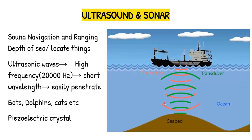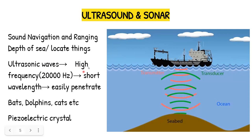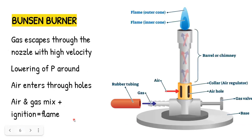Next is SONAR and ultrasound. SONAR is an acronym for Sound Navigation and Ranging, and it is used to determine the depth of the sea or to locate objects such as a seabed, enemy submarines, or fish. Ultrasound — ultrasonic waves — is used in SONAR because it has a high frequency of 20,000 hertz and a very short wavelength, making it easily penetrable. Bats, dolphins, and cats also produce ultrasound for navigation. Piezoelectric crystals are the source of ultrasonic waves.